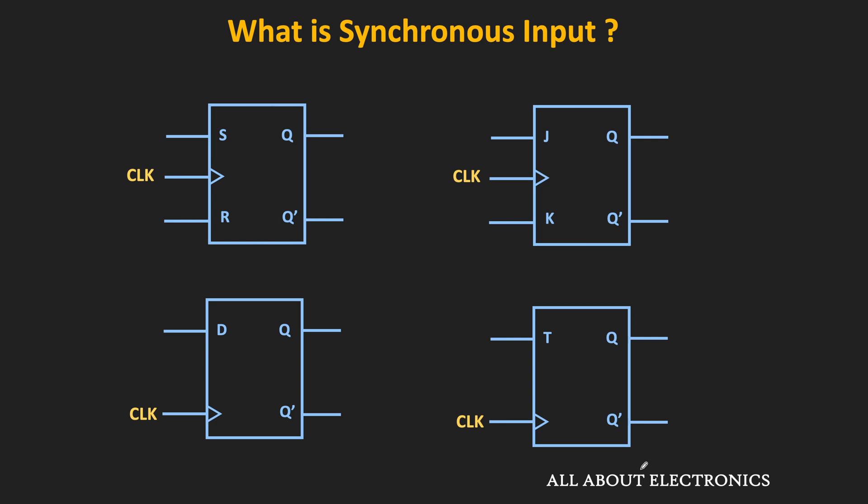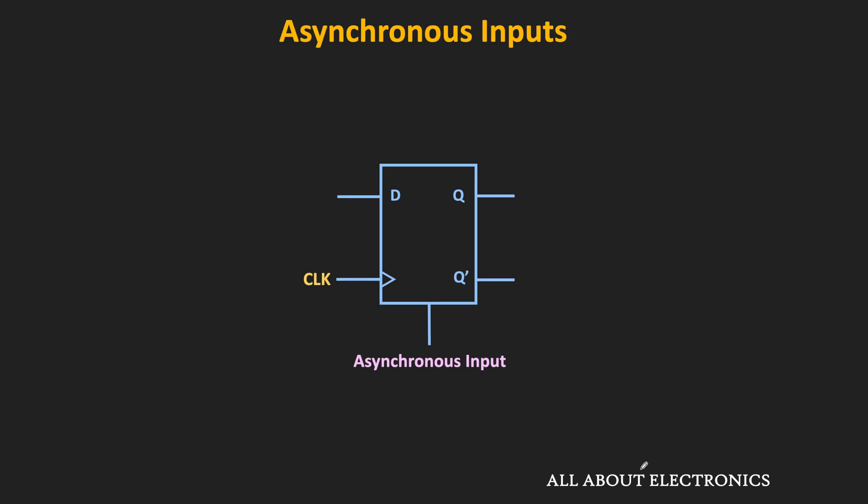But apart from these synchronous inputs, the flip-flop also has asynchronous inputs. This asynchronous input can change the output state of the flip-flop regardless of the condition of the clock signal and the synchronous inputs. That means these asynchronous inputs can set the flip-flop to logic 1 or logic 0 at any time regardless of the clock signal and the other synchronous inputs. Any commercially available flip-flop consists of two asynchronous inputs: preset and clear.